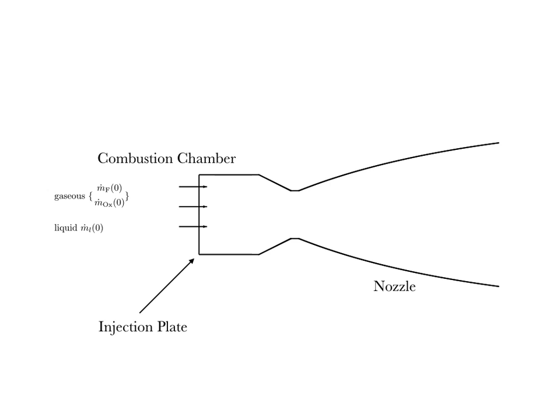The setup is as follows. We have a combustion chamber, and after the combustion chamber is a nozzle. We are injecting fuel and oxidizer through an injection plate. The oxidizer we will assume is completely in the gas phase in the combustion chamber because of the high temperatures in the combustion chamber.